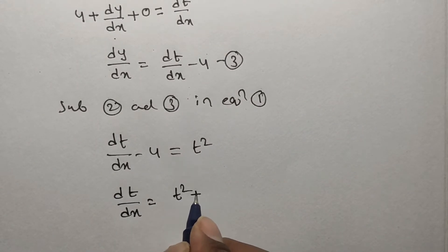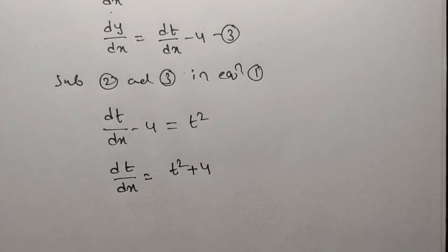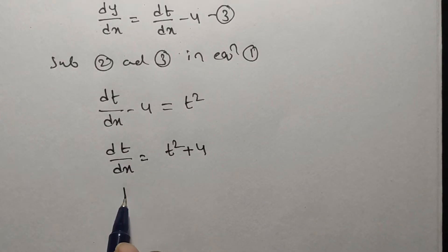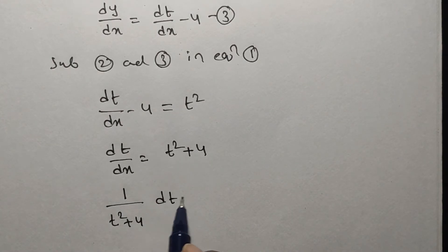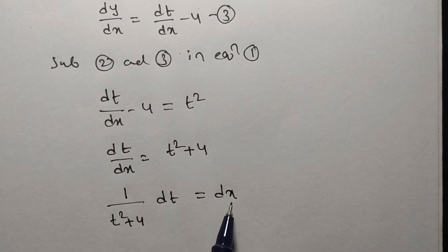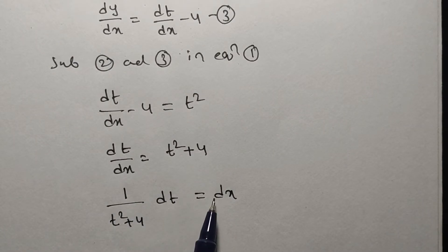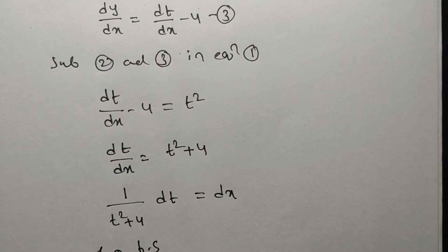Now it is possible to apply the variable separable method. We have dt/dx = t² + 4, so we can write: (1 / (t² + 4)) dt = dx. The t terms are on one side and the x terms are on the other side. Note that there is no explicit x term on the left.